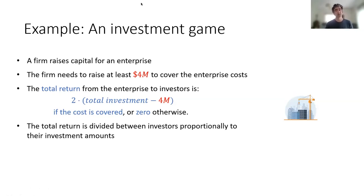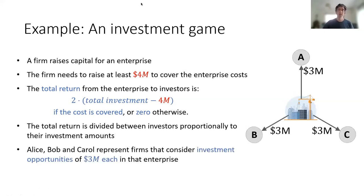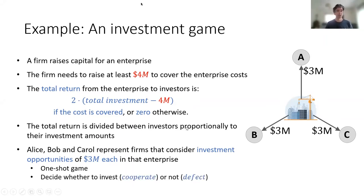The total return is divided between investors proportionally to their investment amounts. Alice, Bob, and Carol represent firms that consider investment opportunities of $3 million each in that enterprise. In the drawing, the arrows point in the direction towards the investors, so in the direction of the returns. This is a one-shot game in which every player decides whether to invest — which we call cooperate, and receive the returns — or not to invest, which we call defect, and keep the investment amount.